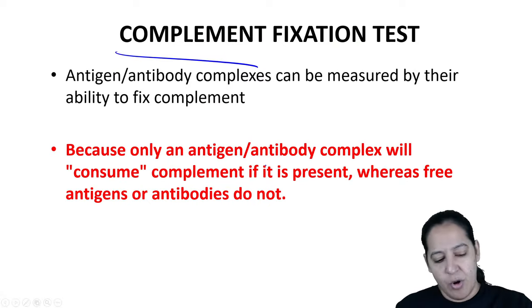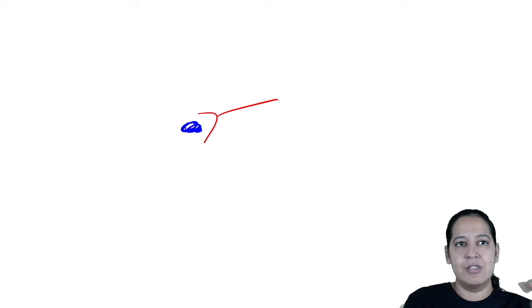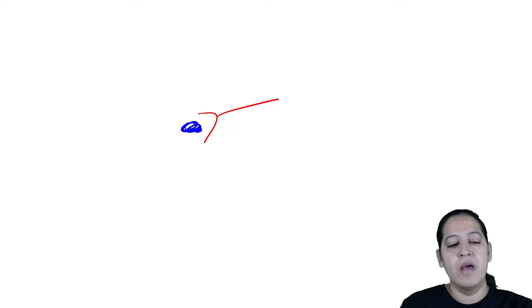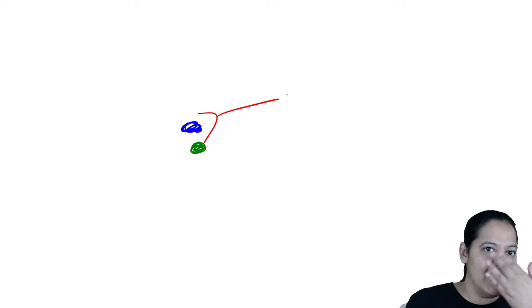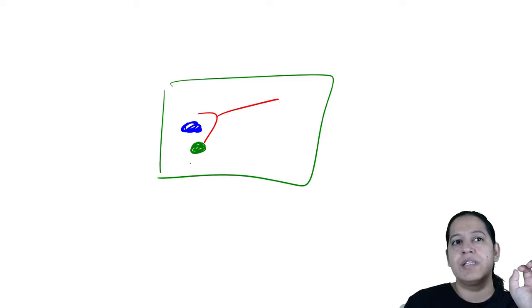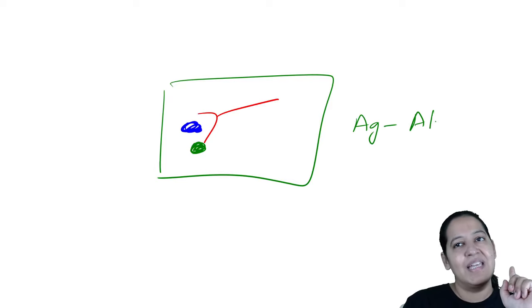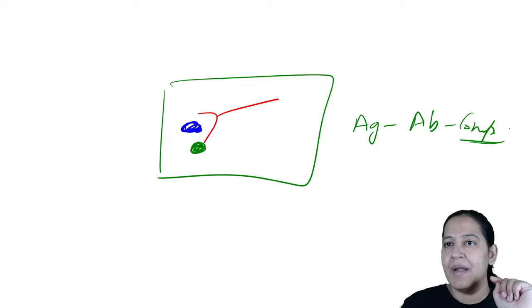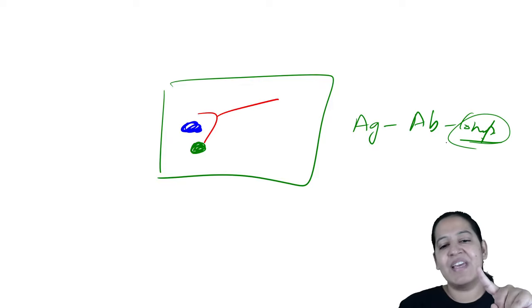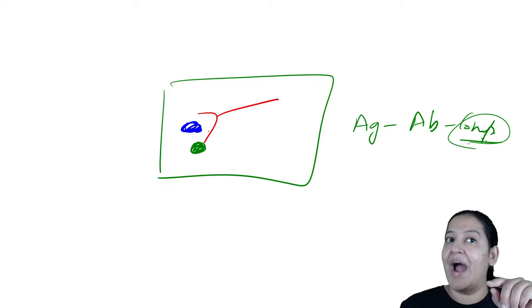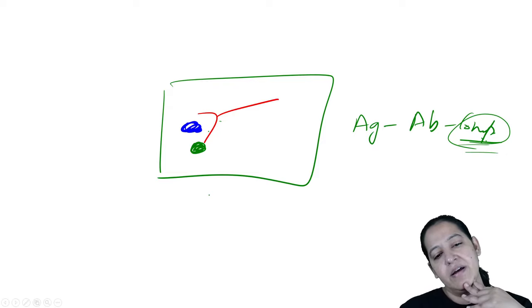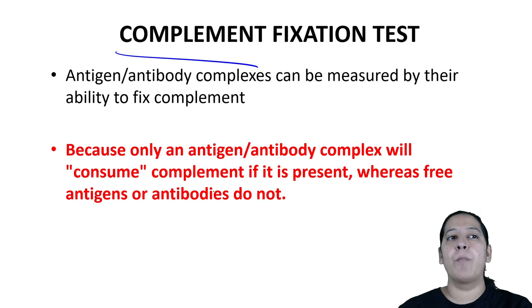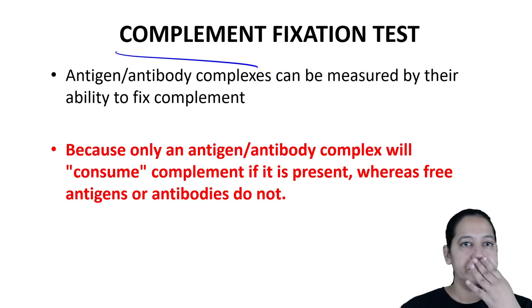Complement fixation test (CFT) principle: complement is present in human blood. Whenever antigen-antibody complexes form, complement binds to that complex forming a triad of antigen, antibody, and complement. Critically: complement cannot bind to free antigen alone or free antibody alone — it only binds to the antigen-antibody complex.